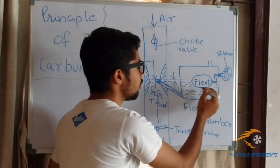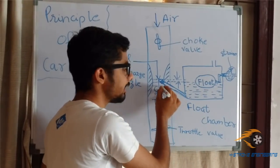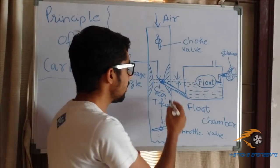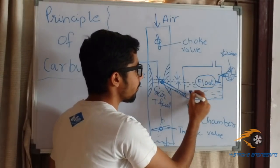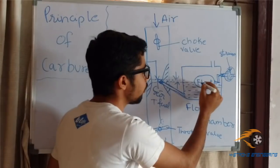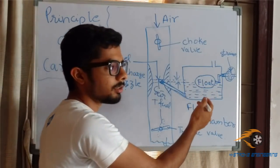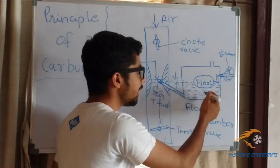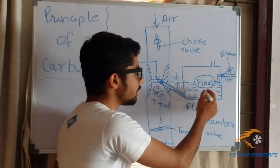Now, this is the fuel. What happens is when the fuel is sucked in due to the principle of carburation, the level of fuel in the float chamber tends to decrease. As a result, the float which is present in, this is called a float, which is a light body, it floats in the fuel in the float chamber.